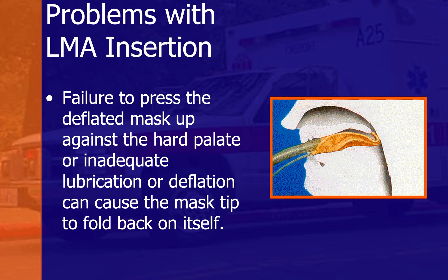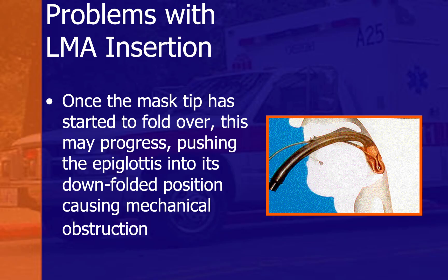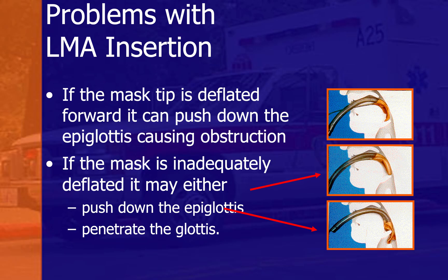Problems with LMA insertion include: failure to press the deflated mask up against the hard palate, or inadequate lubrication, which can cause the mask tip to fold back on itself in the pharynx. Once the mask tip starts to fold over, it may push the epiglottis down into a folded position, causing mechanical obstruction. If the mask tip is deflated forward, it can push down the epiglottis causing obstruction. If the mask is inadequately deflated, it may either push down the epiglottis or penetrate the glottis.